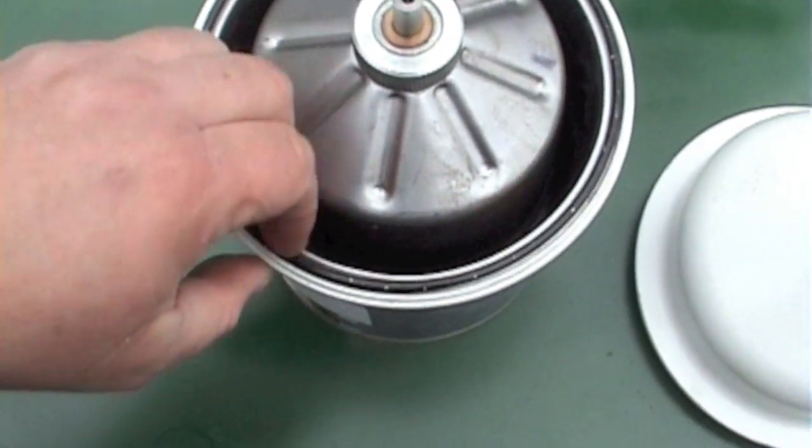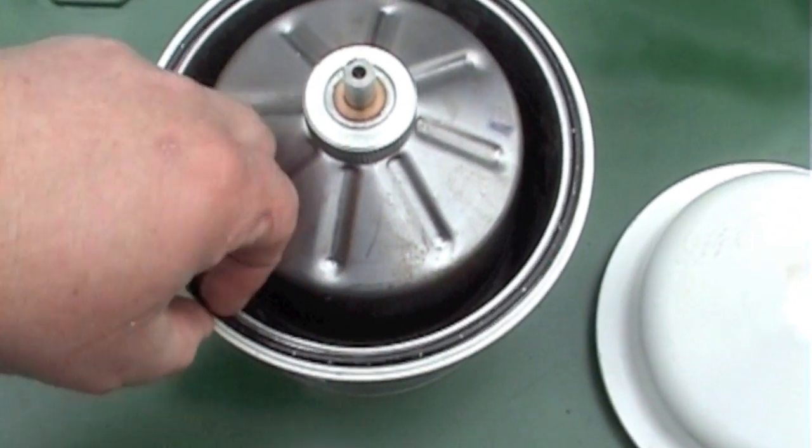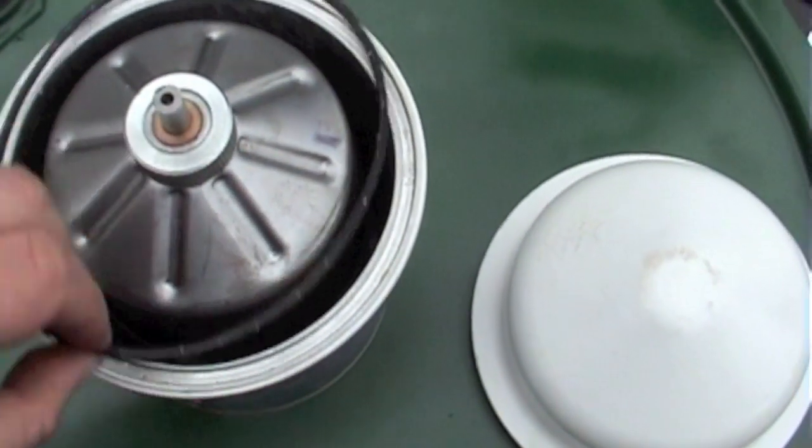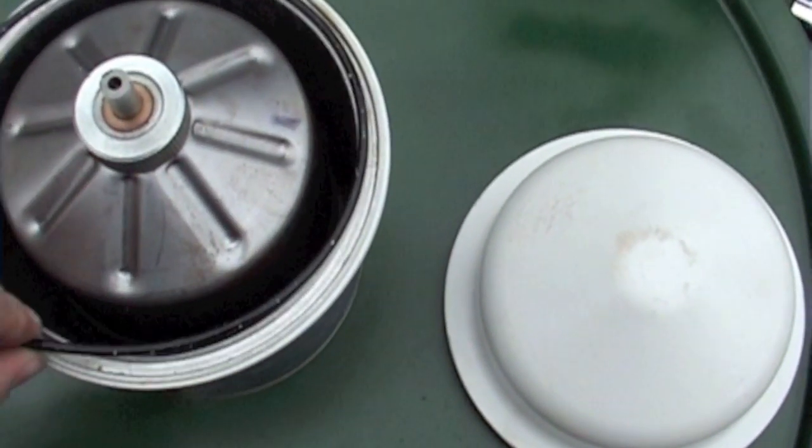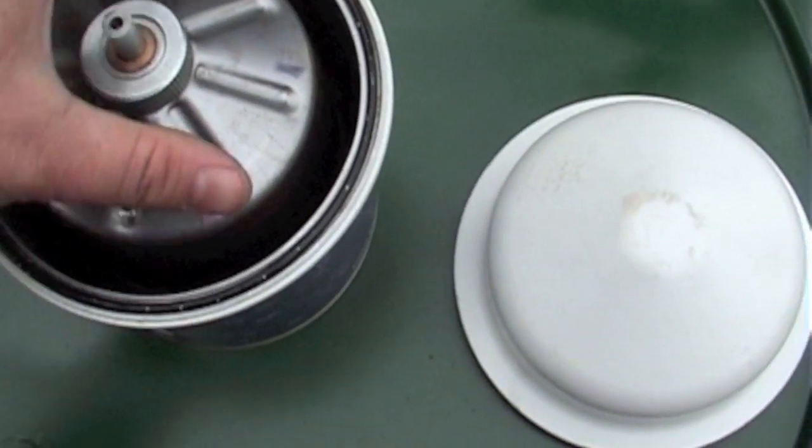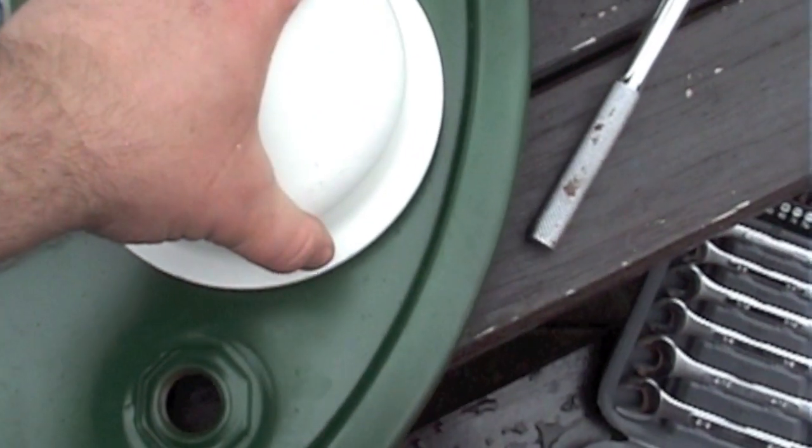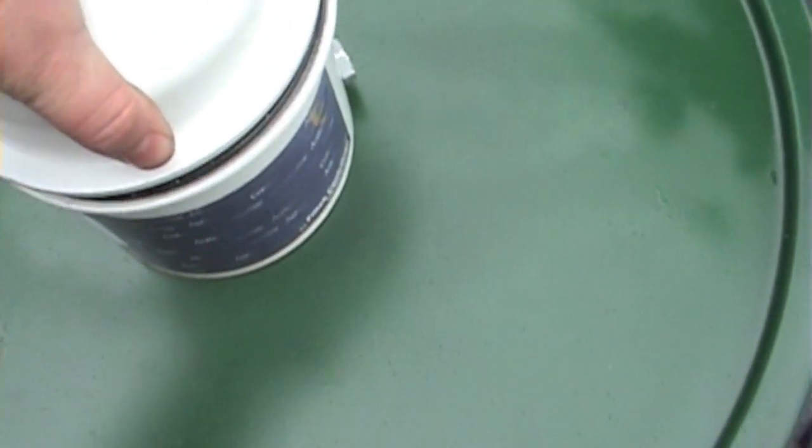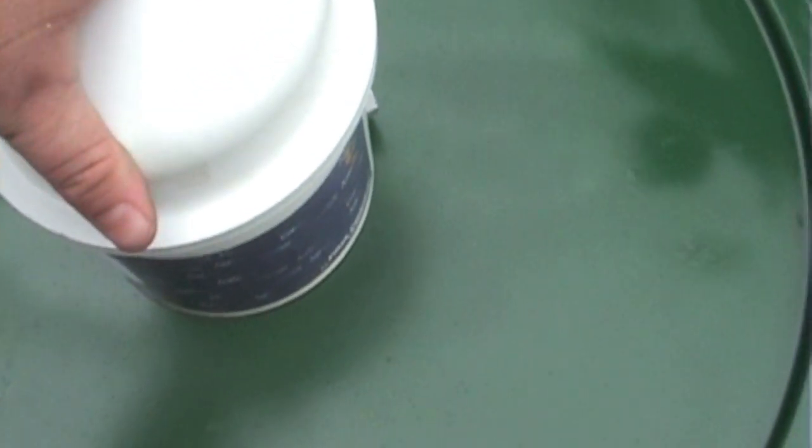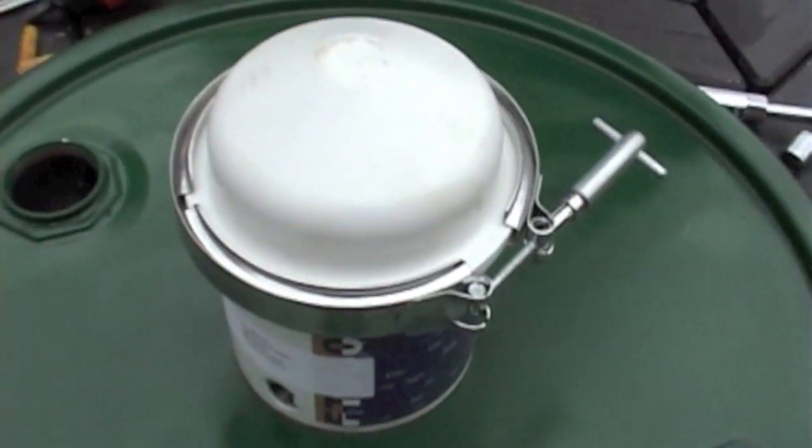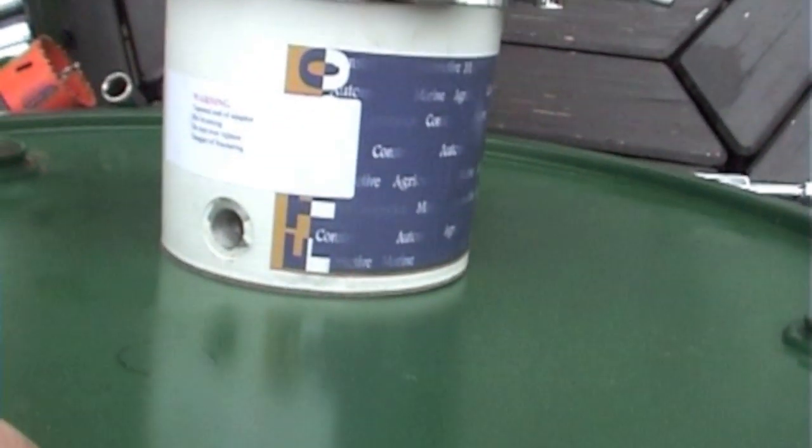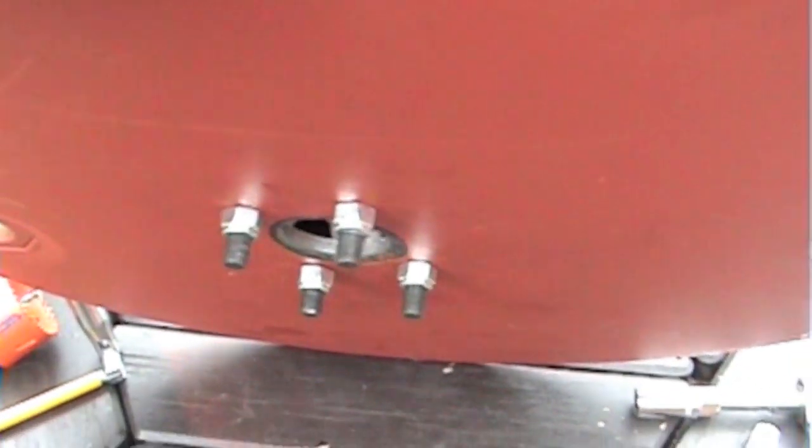When cleaning it, make sure this flat washer gets taken out and put back in, or else it'll start leaking everywhere. Make sure you don't lose that. You can get spares but you don't want to lose it. Put that back on top. That makes a nice seal, and then just tighten that. That's solidly connected.